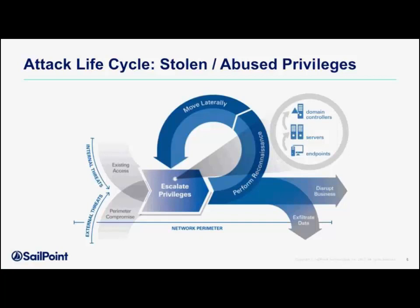This picture puts it all in perspective — this is the attack lifecycle. This is the primary attack cycle we're defending against. Whether the threat is coming from internal or external, the attacker is looking to establish control over a particular part of the infrastructure and is looking for advanced privileges. If they don't find them on any one machine or account or application, they move laterally to escalate privileges, potentially to servers and domain controllers to get into very privileged access. Once they establish that access — which could take some time and patience — they start to exfiltrate data.